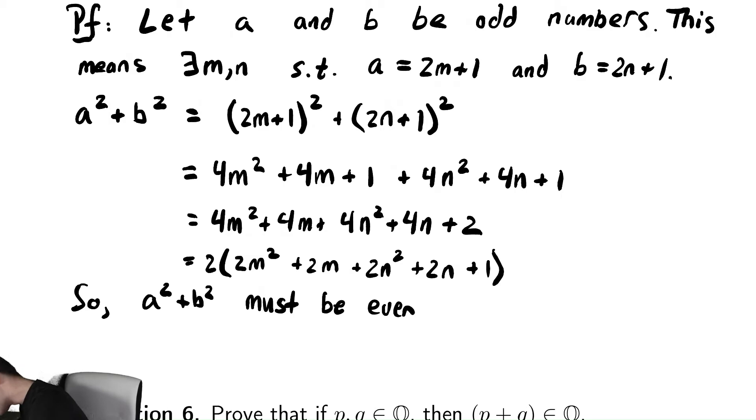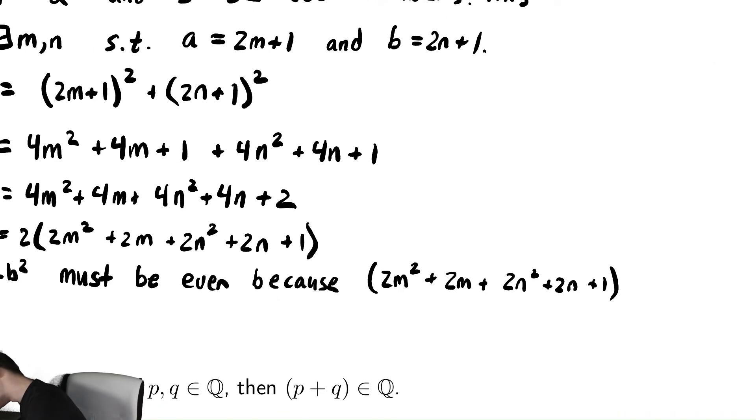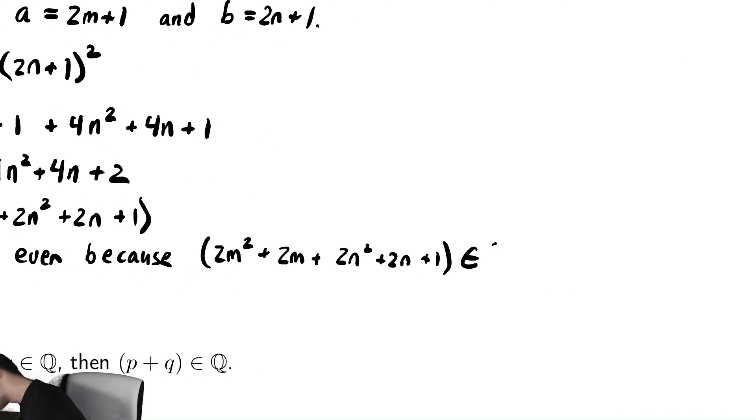And again, we can cite our evidence because that horrible expression, 2m² + 2m + 2n² + 2n + 1, is an integer. And the fact that it's twice that thing, so therefore it must be even.